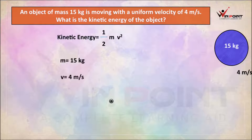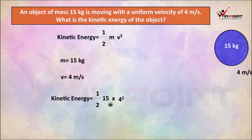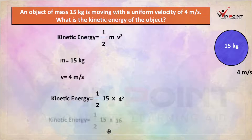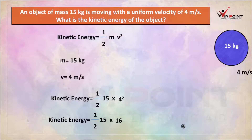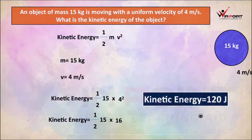We substitute these two values into the equation. Kinetic energy is equal to half into 15 into 4 squared. What is 4 squared? It is 16. Then it will be half into 15 into 16. Calculating this value, we get kinetic energy equal to 120 Joules.